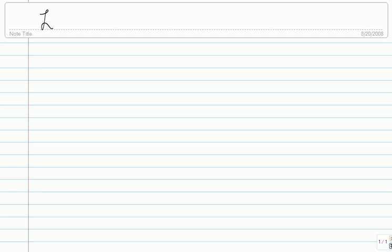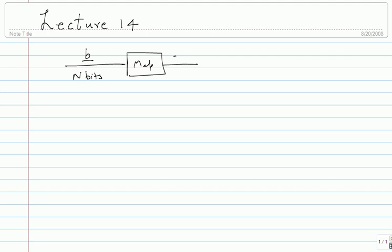This is lecture 14. A couple of things before we continue. One thing I probably should have emphasized more carefully, even at the beginning, is the picture we have for a communication system. We always said: I have n bits which I map into some symbol, some a + jb belonging to the constellation, and then I do a multiplication with phi of t.